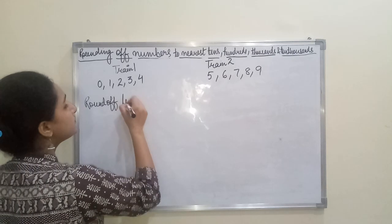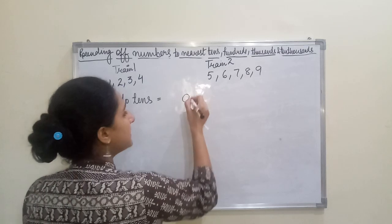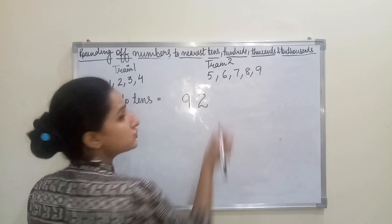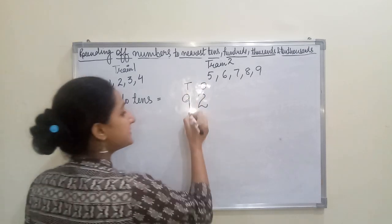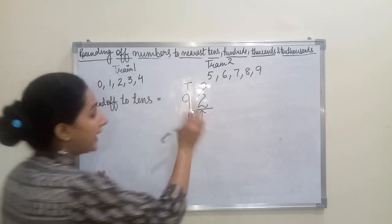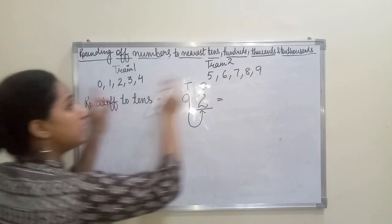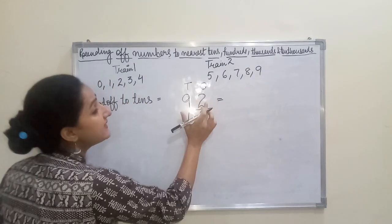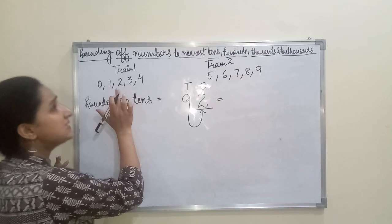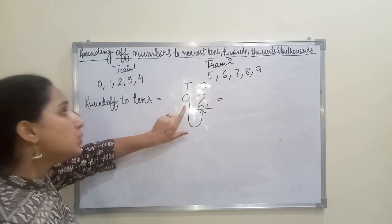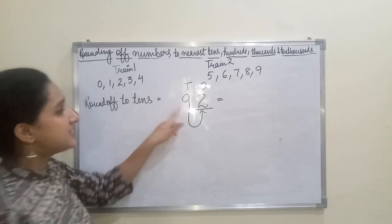Let's start with rounding off to nearest tens. Take example 92. First, write down the place values. Second, mark the previous digit — which is 2. Third, check whether 2 belongs to Train One or Train Two. It clearly belongs to Train One, which is a normal non-AC train, so there will be no change in the original position, which is the tens place.